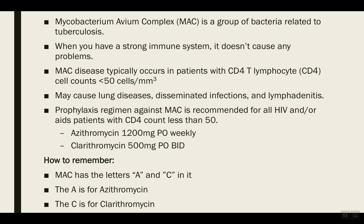Mycobacterium is a type of bacteria related to tuberculosis, usually found in soil, water, or food. The majority of people have it in their body, but when you have a strong immune system it doesn't cause problems. When you have a weakened immune system, such as in HIV or AIDS patients where the CD4 count is less than 50 cells, prophylaxis is usually required.